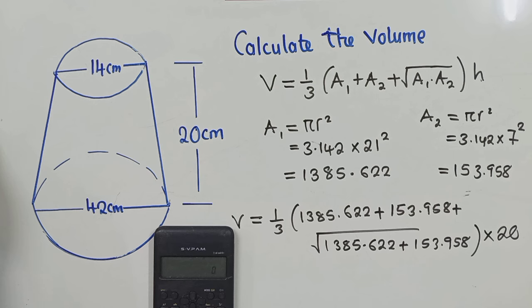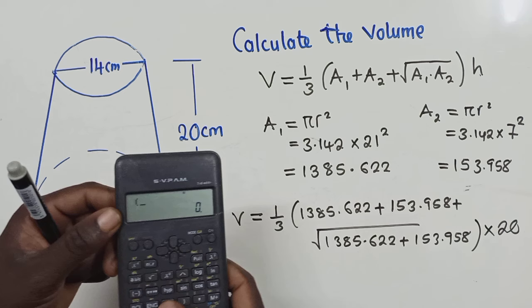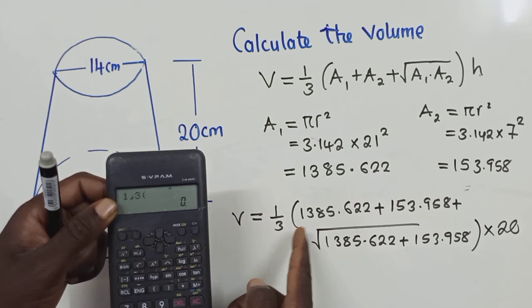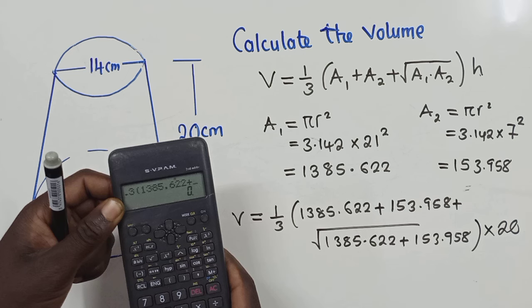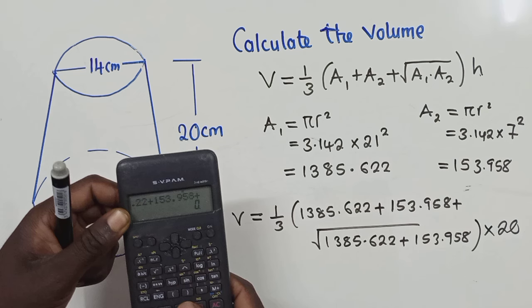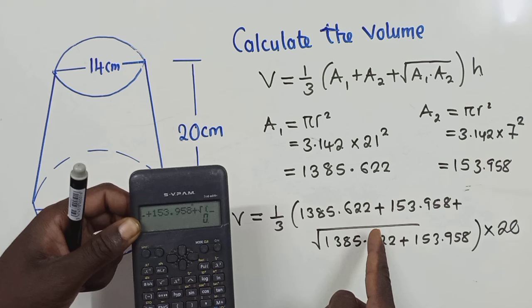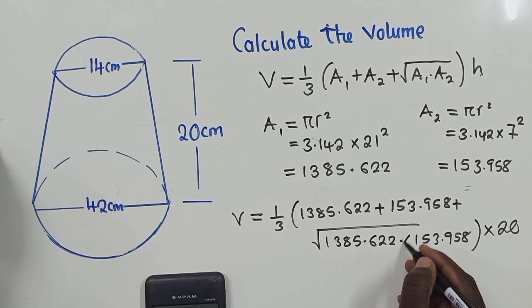So now, let me get my calculator and try to punch this. Let me start with the brackets. So this is 1 over 3 multiplied by 1,385.622 plus 153.958 plus the square root. Actually, this is multiplication, not plus. Here it's times. So it will be 1,385.622 times 153.958.